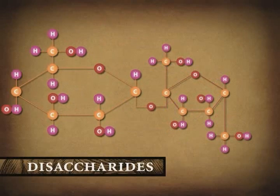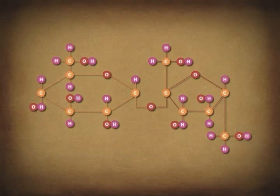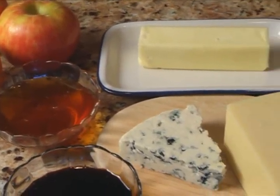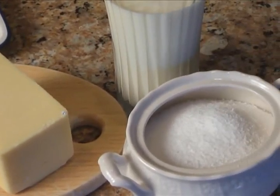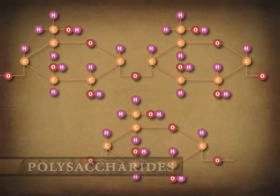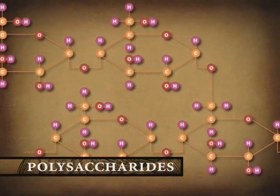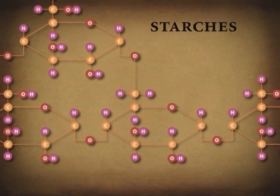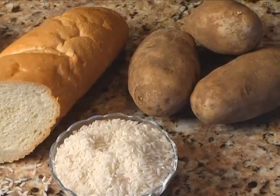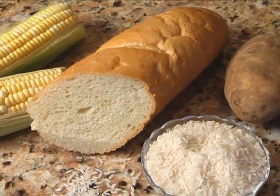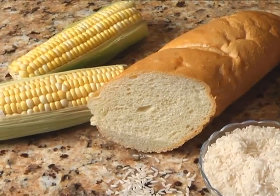Disaccharides are composed of two monosaccharides. Monosaccharides and disaccharides are found in fruits, honey, molasses, milk and milk products, as well as common table sugar that comes from sugar beets or sugar cane. Polysaccharides are composed of chains of monosaccharides. The most important ones are starches and glycogen. Starches are the storage form of carbohydrate found in plants. Foods like potatoes, rice, wheat, and corn are all major sources of starches in the human diet.